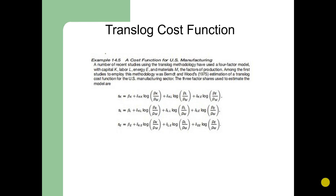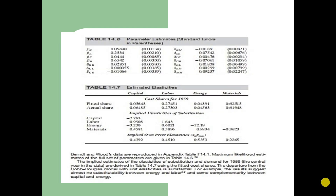S_K, where S_K is the share of capital in the total cost, is given by: S_K = beta_K + sigma_KK log(P_K / P_M) + sigma_KL log(P_L / P_M) + sigma_KE log(P_E / P_M). Similarly, S_L and S_E are the shares of labor and energy in total cost respectively, with analogous equations normalized by the price of materials P_M.